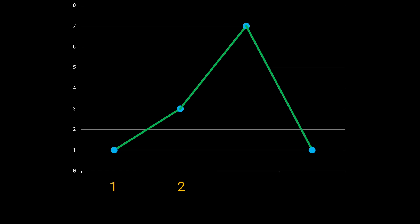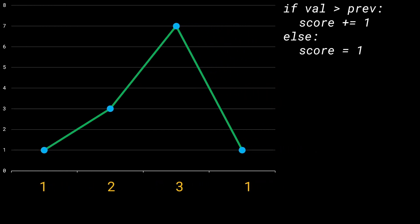Moving on to the kid with rating 7: it looks at the kid of rating 3 on the left and rating 1 on the right, and realizes it's greater than both. Since it has a higher rating than its neighbor of rating 3, it should get one more candy than that neighbor, so we assign it 3. The last kid with rating 1 has the lowest rating, so we just assign it the default value of 1. To formalize: if the current kid's rating is greater than the previous kid's, increase the score by 1 and save it; otherwise, set the score to 1 by default.